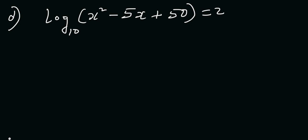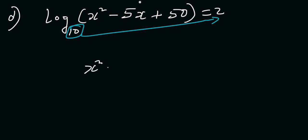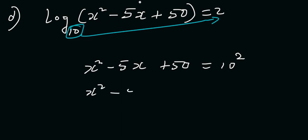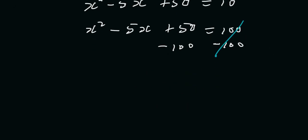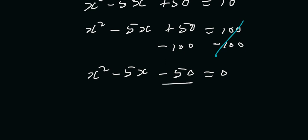Finally, Question D: log(x²-5x+50) to base 10 is equal to 2. Recognize the base is 10, switch it over, and make 2 the exponent. Ignore the log, so this becomes x²-5x+50 = 10², and 10² = 100. So x²-5x+50 = 100. Subtract 100 from both sides: 100-100 cancels out, and the equation becomes x²-5x-50 = 0.